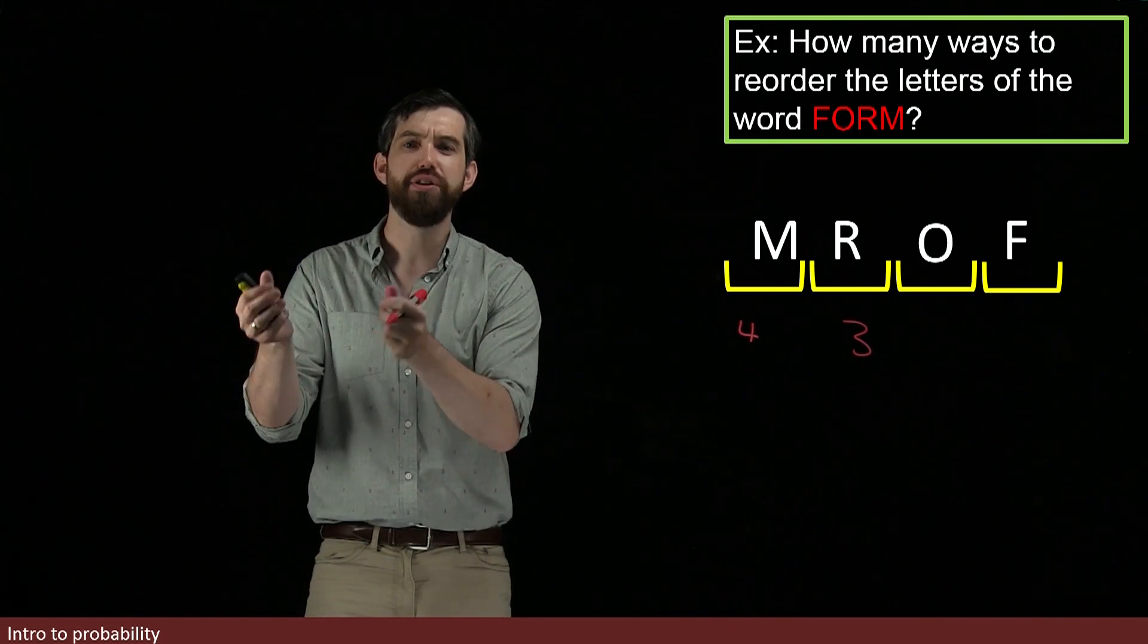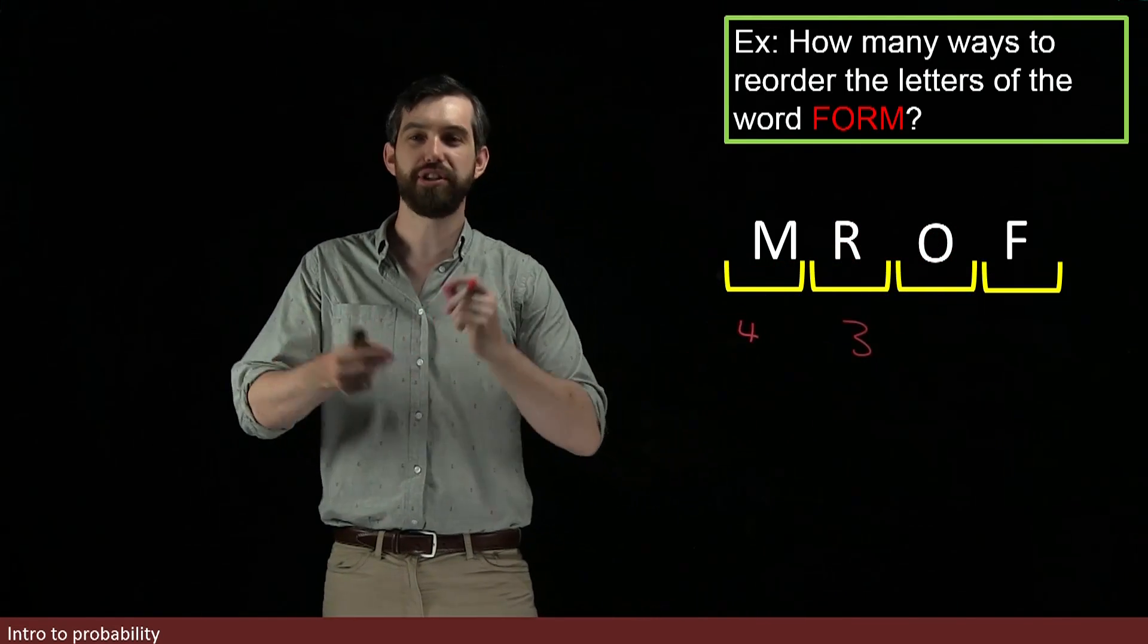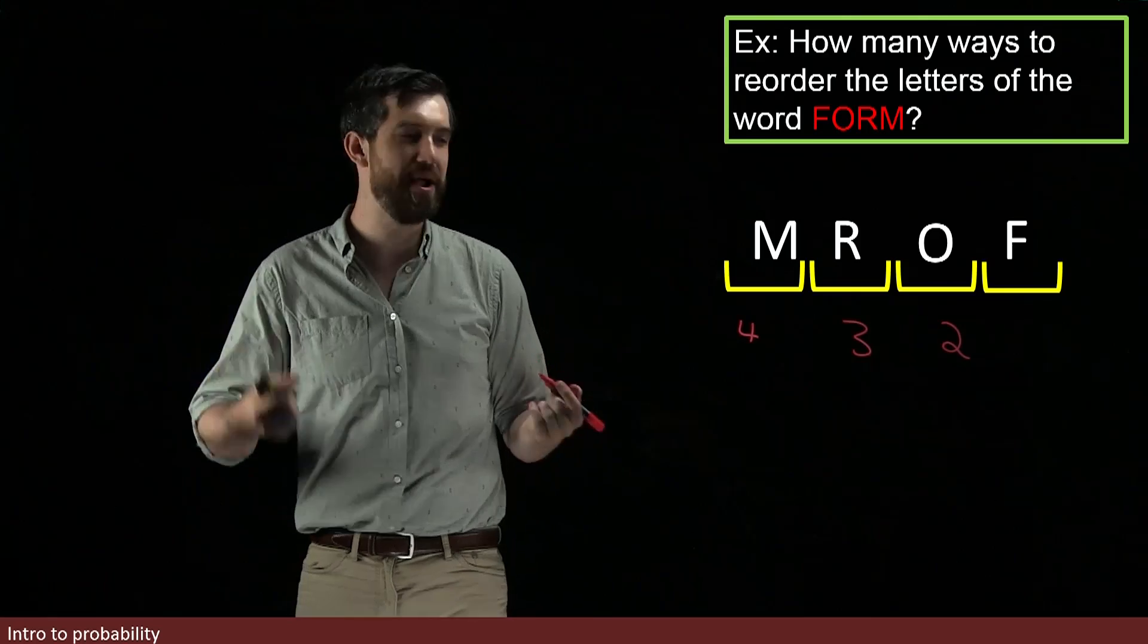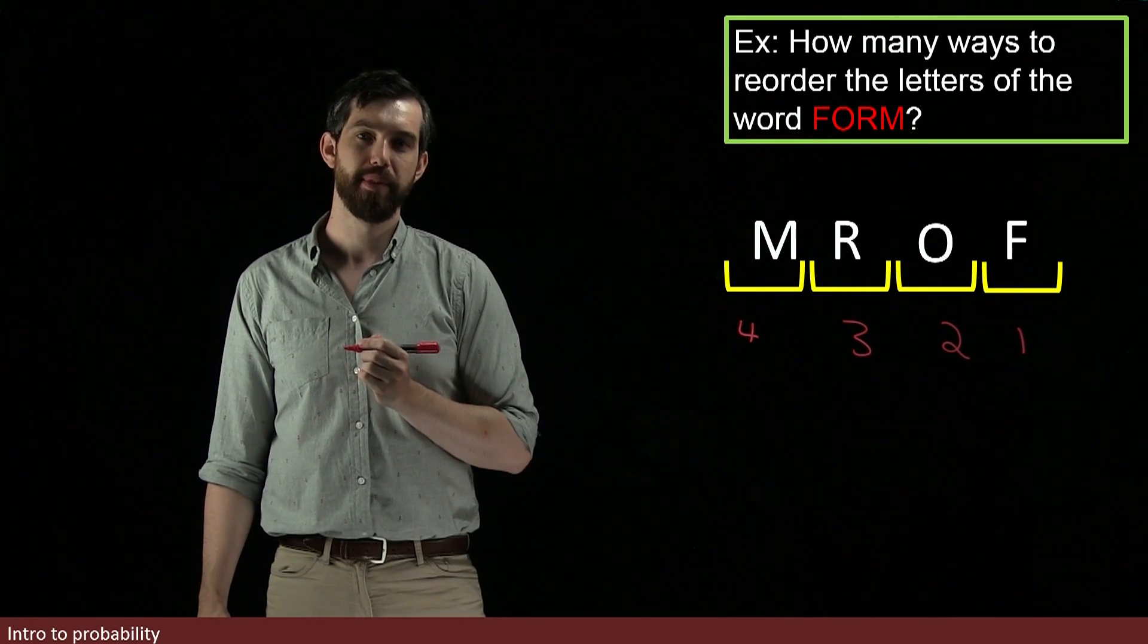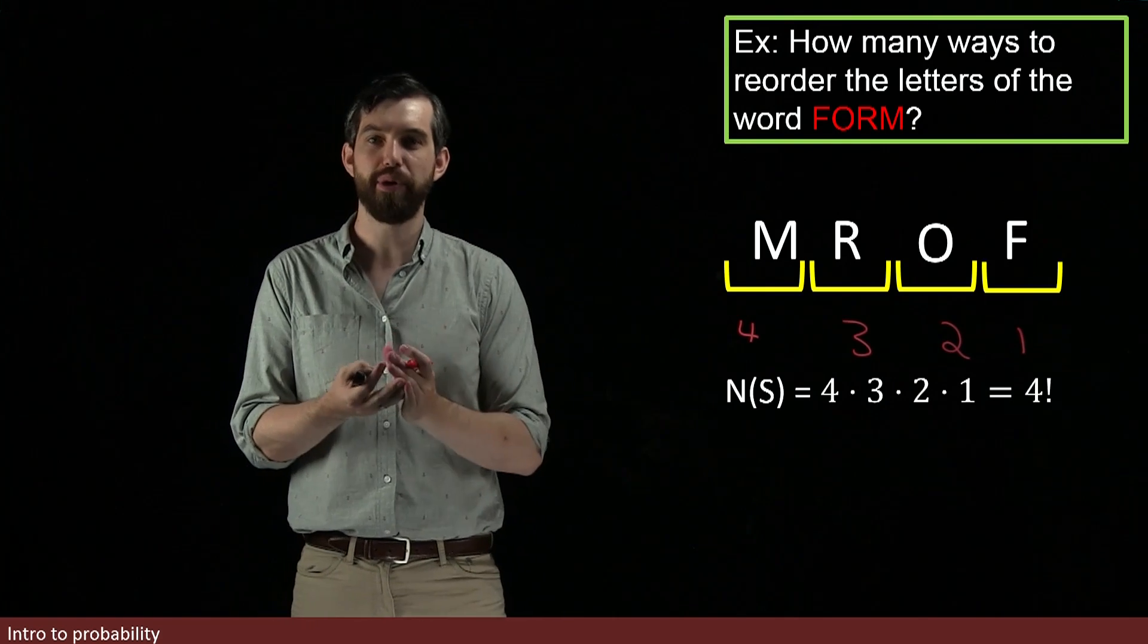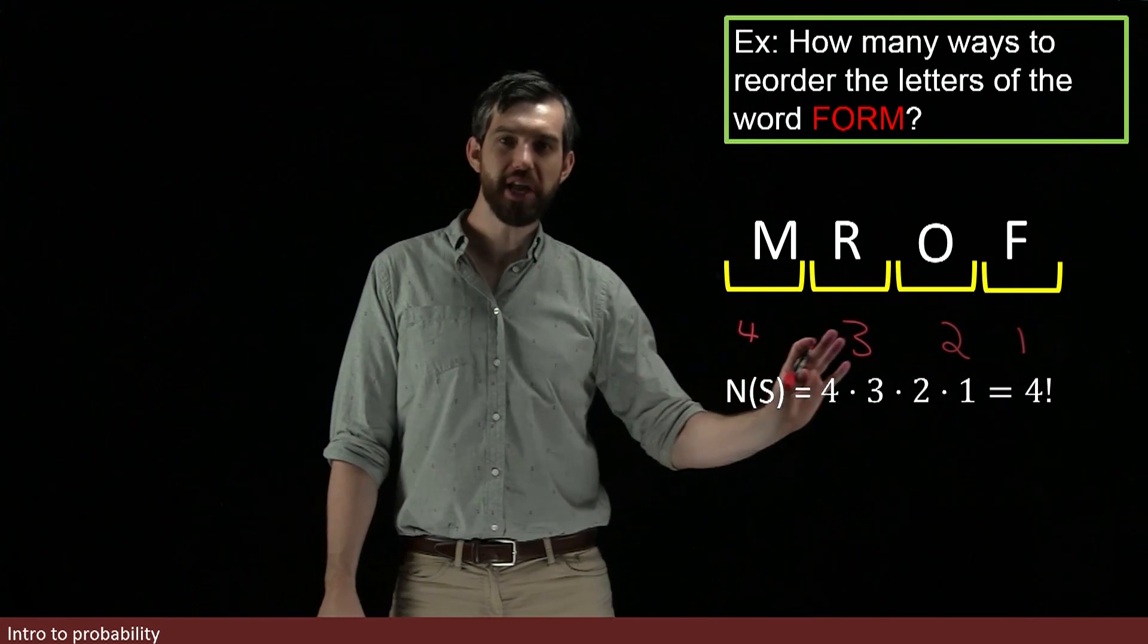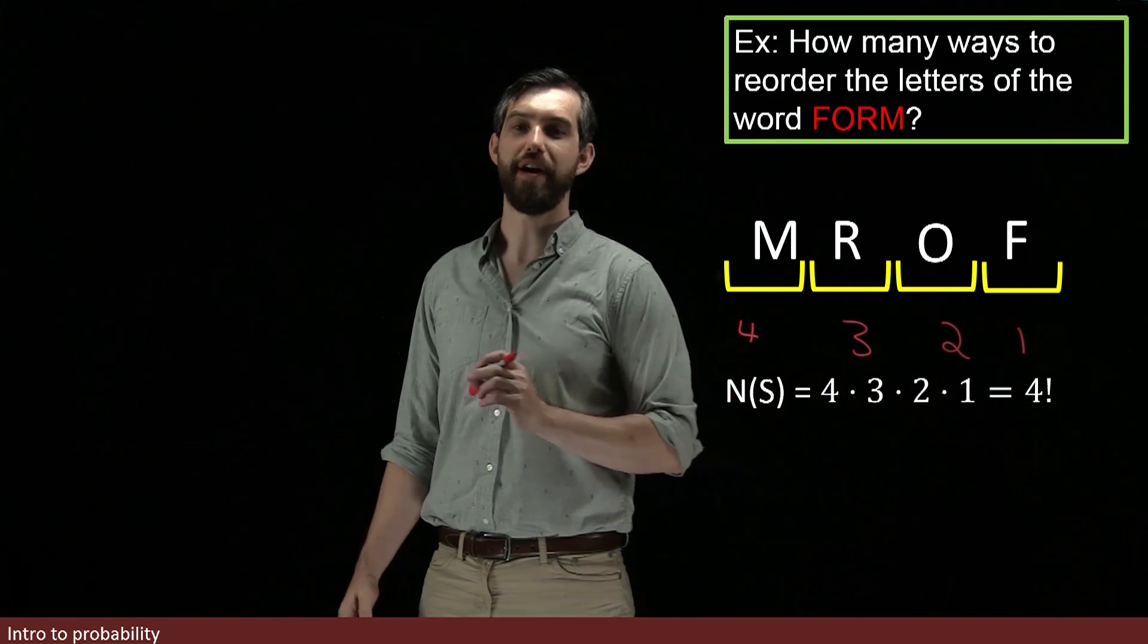Now I've used up two of the letters, only two remain. So for that third slot, I have to put one of the two remaining ones, there's only two different possibilities. And now I've used up all three of my letters. So there's only one remaining and I'm forced, I have to put it into that final spot. So then the number in my sample space, the number in all the different possible ways I could write out the letters of FORM in some new order, is going to be four times three times two times one, or in other words, four factorial.